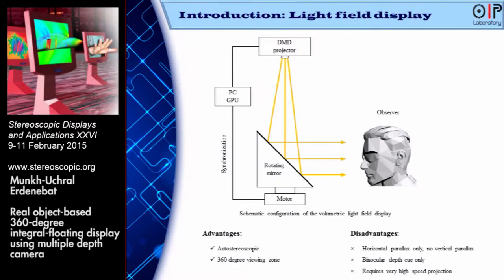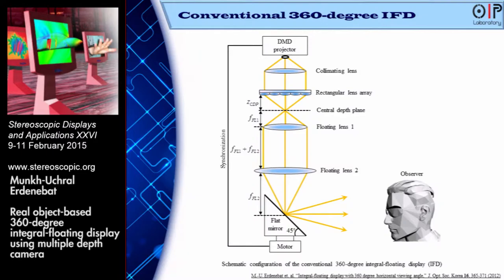The volumetric light field display is one of the very good methods to display three-dimensional images in 360 degrees, but the display image provides horizontal parallax only and binocular depth cues only. So considering the benefits and problems of both systems, we decided to combine these techniques to solve each problem.